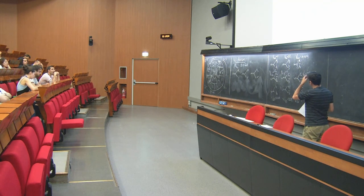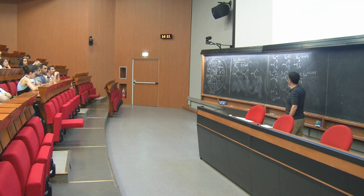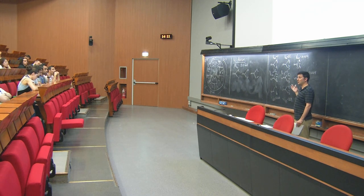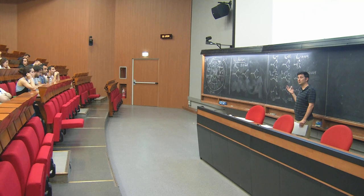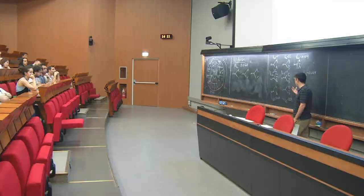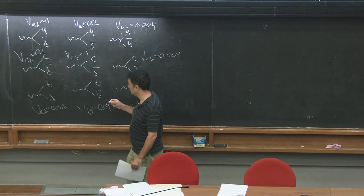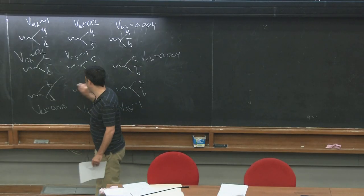Now let's ask which of these decay channels the W cannot access. The top is 175 GeV and the W is 80 GeV, so none of the top-containing final states are accessible. Setting those to zero, what is the branching ratio of the W to, say, electron and neutrino?